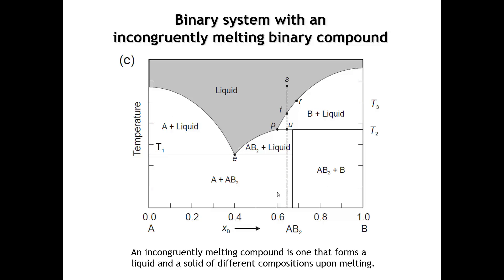In these phase diagrams where we have compound formation, we also sometimes encounter a situation where the intermediate compound is not congruently melting — we would say it's incongruently melting. An incongruently melting compound is one where, when it starts to melt, the composition of the liquid is not the same as the composition of the solid. What that means is the vertical line that represents that composition does not extend all the way up to the liquidus.